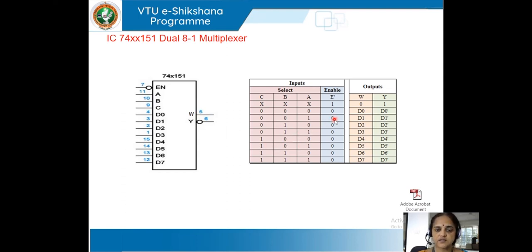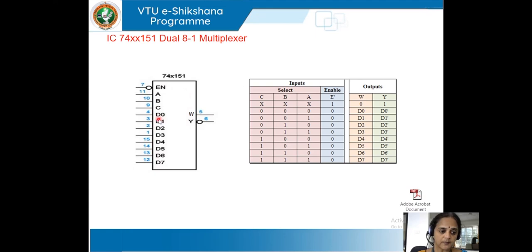When enable is 0 and inputs A, B, C are 001, the output W will have the value of D1, and Y will be the complement of D1. Using the 74151 IC, one of the input lines is selected and made available at the output — which one depends on the values of A, B, C and the status of the enable pin.